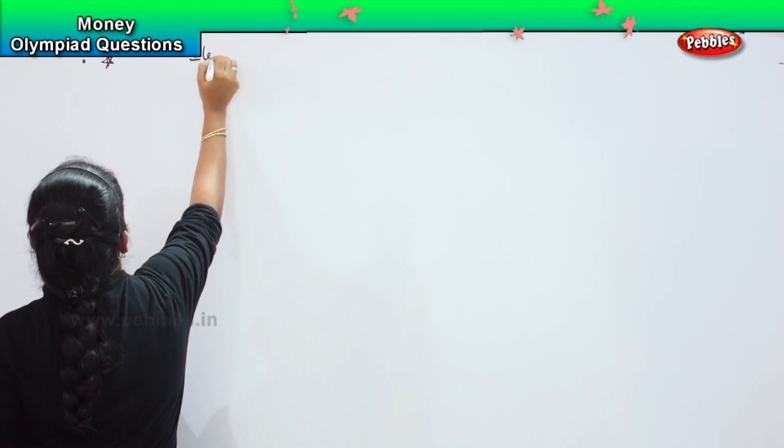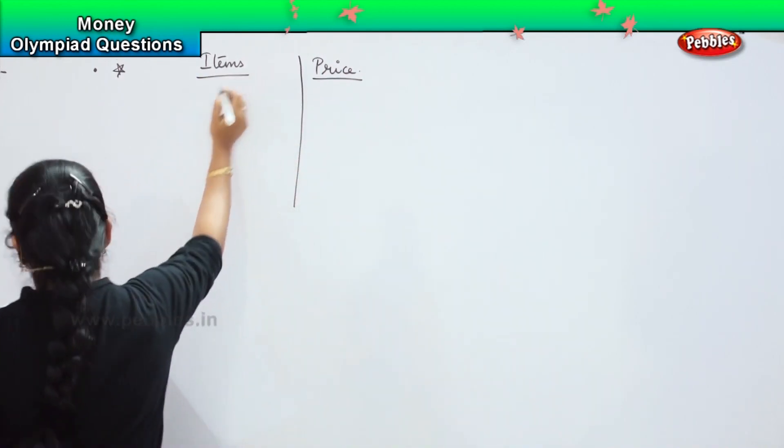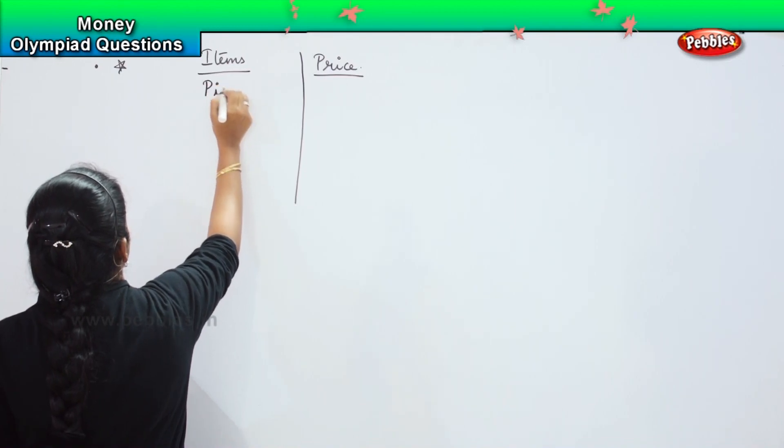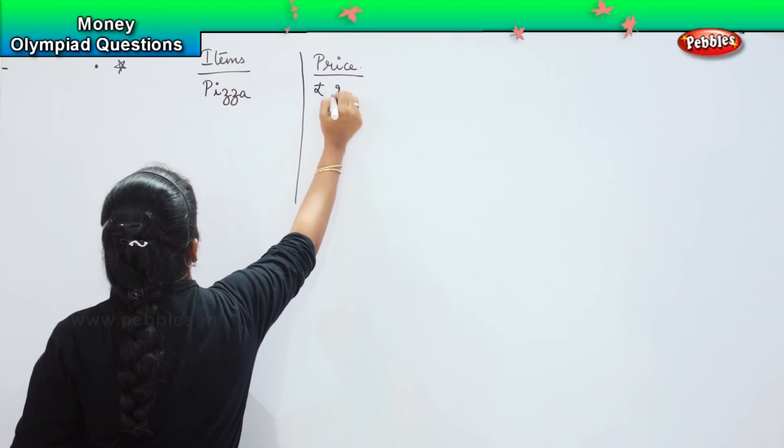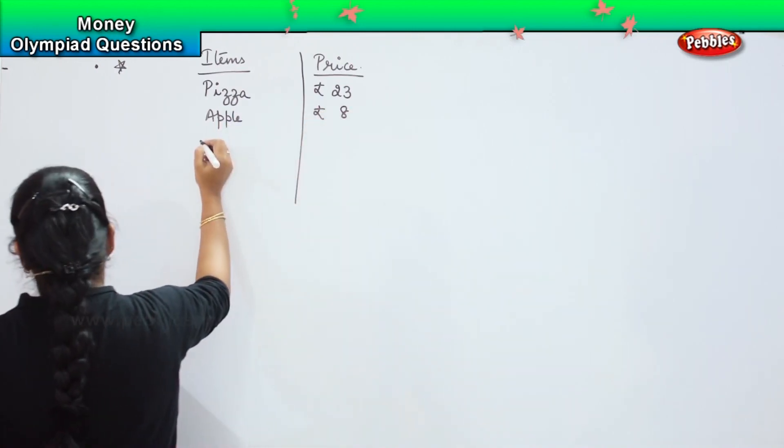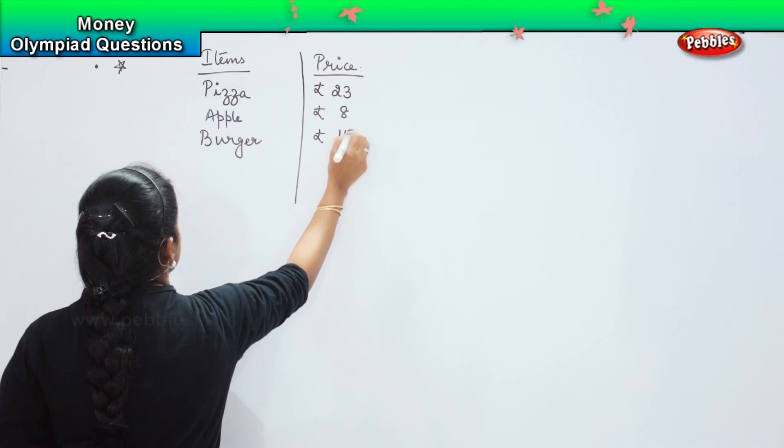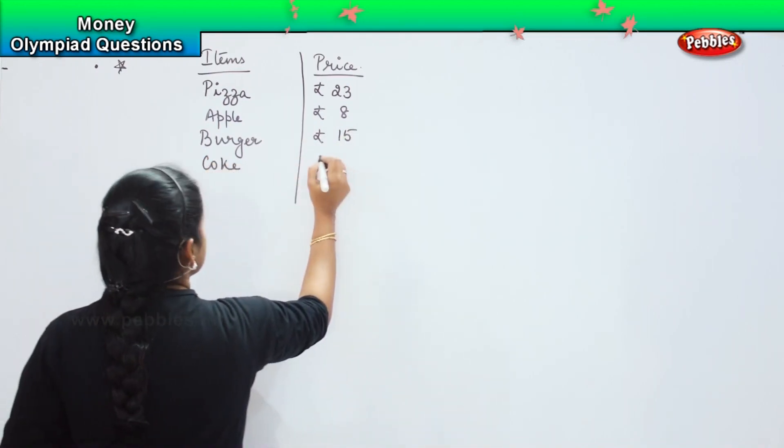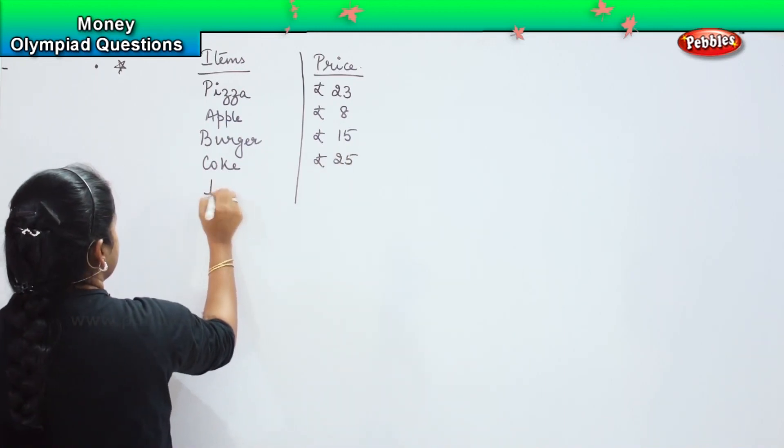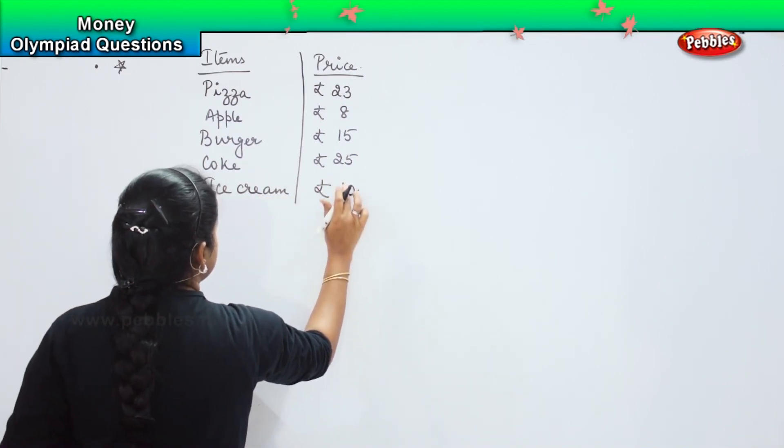Now, this question is something very interesting and tricky. Let us see how fast we will solve. So, now here is the item and here is the price. Pizza costs me rupees 23, then you have an apple which costs me rupees 8, then you have a burger which costs me rupees 15, you have a coke which costs me rupees 25, and you have an ice cream which costs me rupees 10.